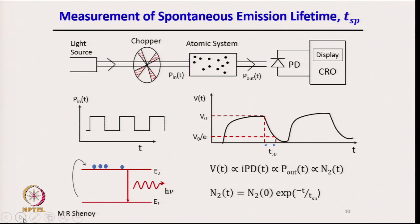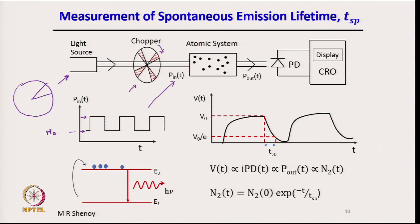A simple laboratory setup for measuring T_sp: a laser light source is chopped by a mechanical chopper — a rotating disk with opaque blades and open gaps. As it rotates, it produces a pulsed output. The P_in signal alternates between full light and no light, with the blade blocking the beam during off periods.